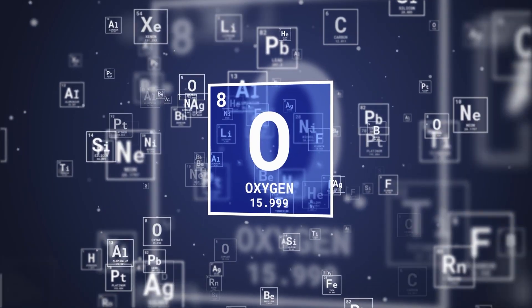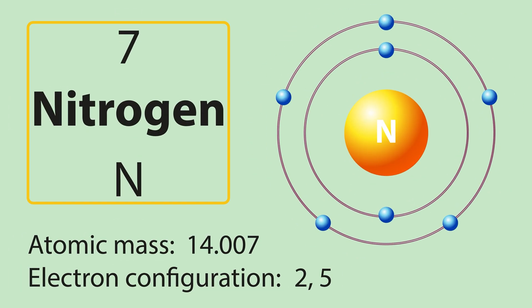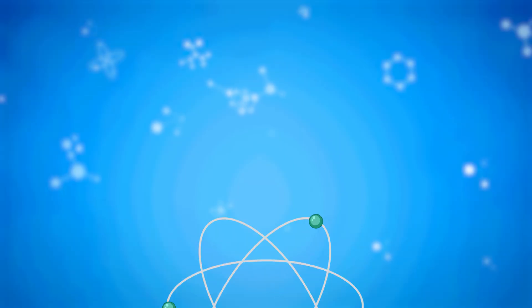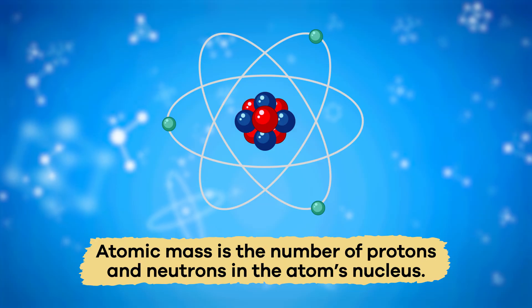Elements are also defined by mass. This is done in two ways: by atomic mass and atomic weight. Atomic mass is the number of protons and neutrons in the atom's nucleus.